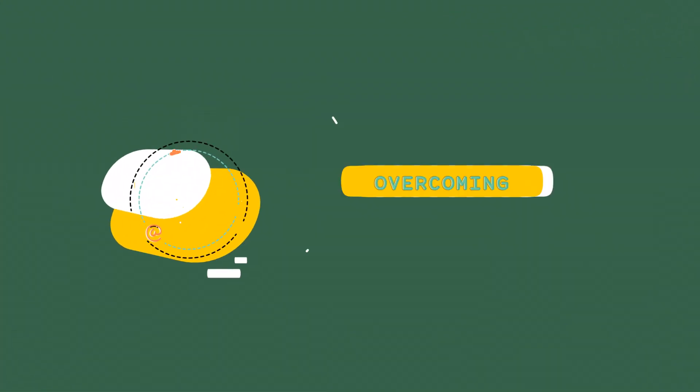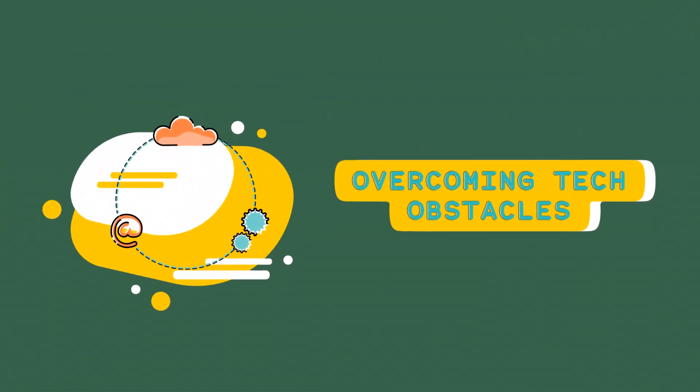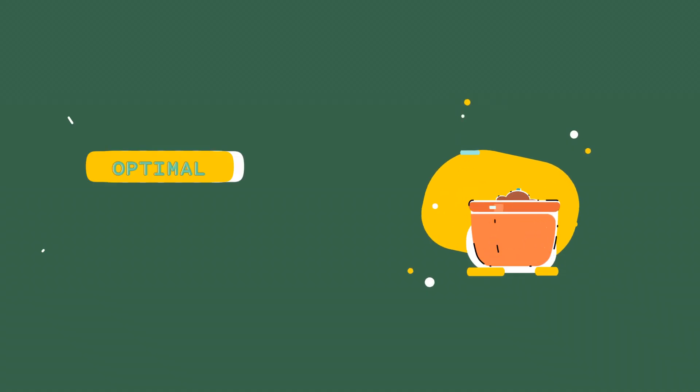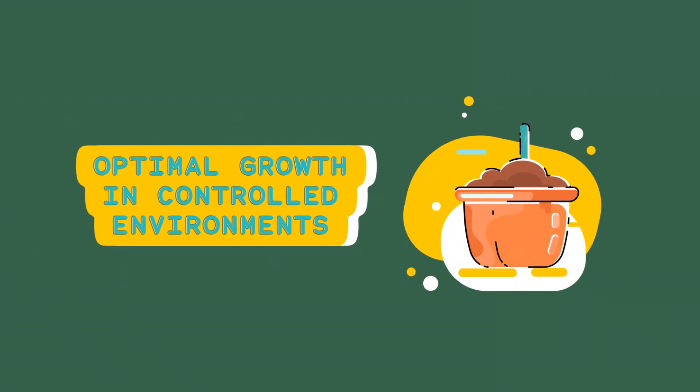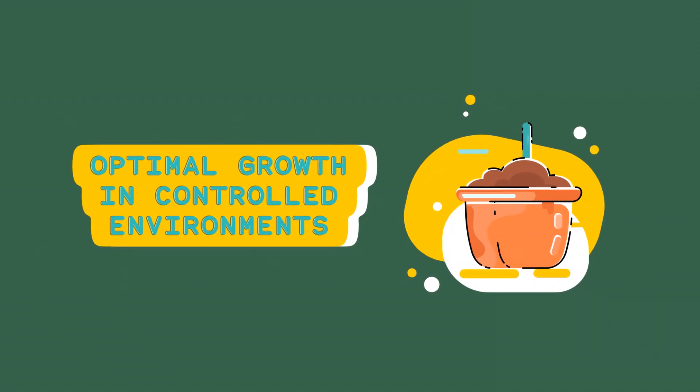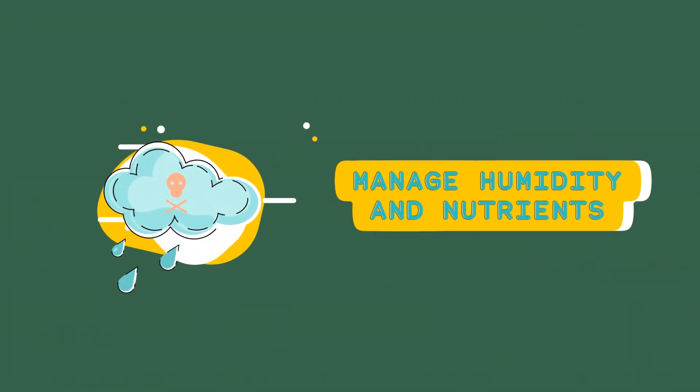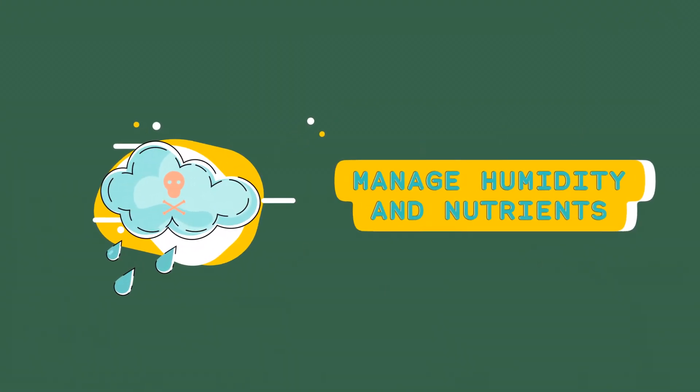Technological challenges. Growing systems. Ensuring optimal growth conditions in a controlled environment can be challenging. Factors like humidity, CO2 levels, and nutrient delivery need to be carefully managed.